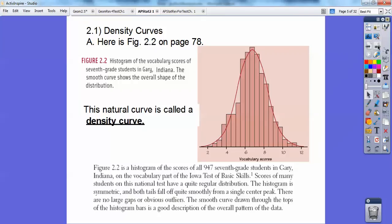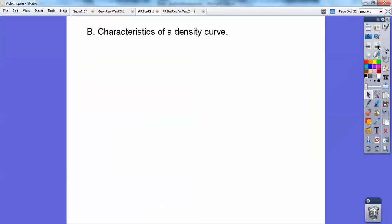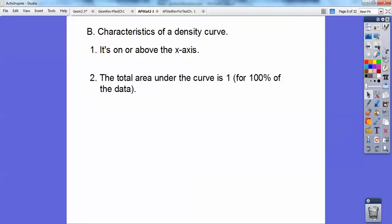So this natural curve is called a density curve. Characteristics of a density curve: it's on or above the x-axis, almost always above the x-axis. The total area under the curve is 1, and the 1 counts for 100%, so 100% of the data.